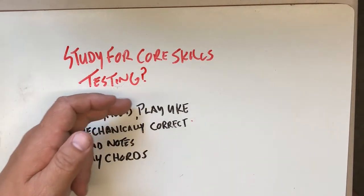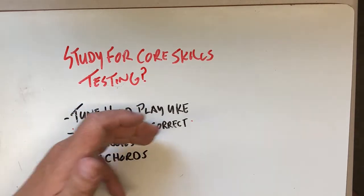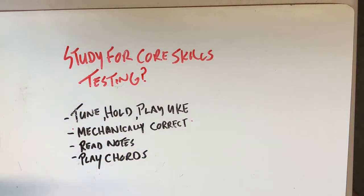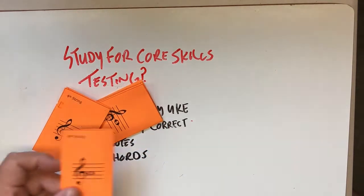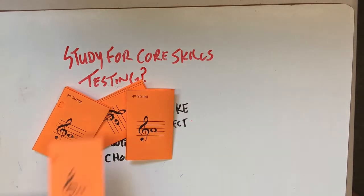And that you're playing the uke correctly, and that means mechanically correctly. That means your left hand is shaped correctly and your right hand is in the correct place and strumming properly. Then we'll check for two very specific things. I will grab your orange flashcards, well, copies of the ones you have, and put them down.